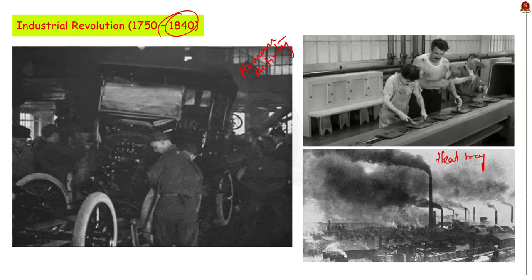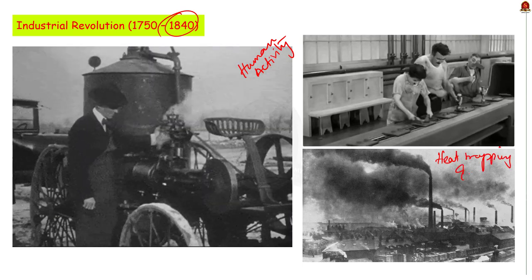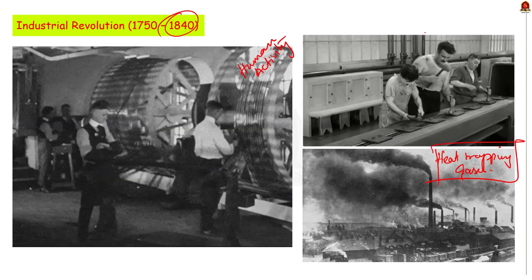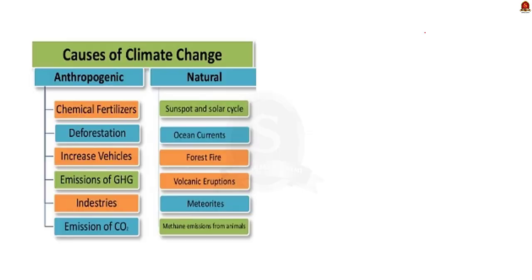The rate of climatic changes depends on the nature of the causative factor. The causes of climate change include natural causes like sunspot and solar cycles, volcanic eruptions, and forest fires, whereas anthropogenic causes like chemical fertilizers, deforestation, and emission of greenhouse gases have contributed a lot to climate change.